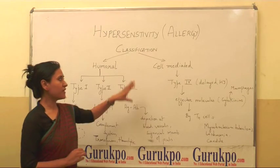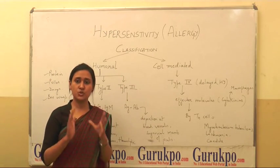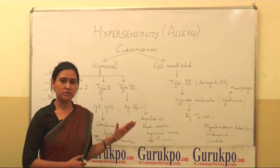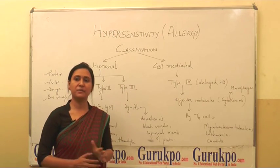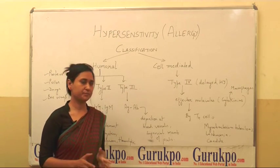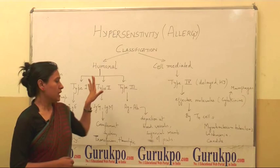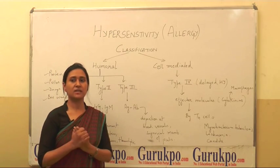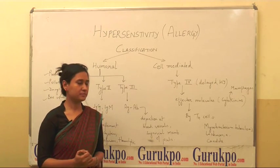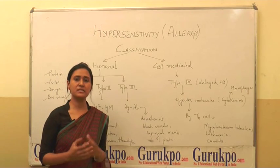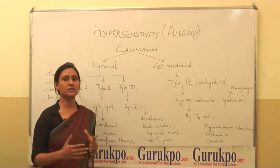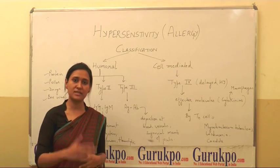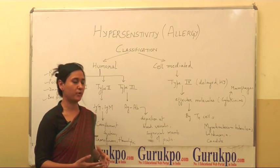I have classified this allergy into two main groups: first is humoral and second is cell-mediated hypersensitivity. Humoral means it is contained in the blood, and cell-mediated means it is present in the cells — the mechanism actually occurs in the cell and it affects the other cells of our body.